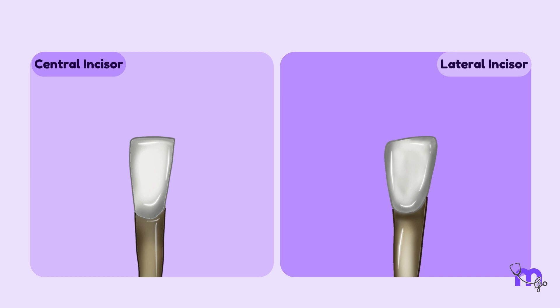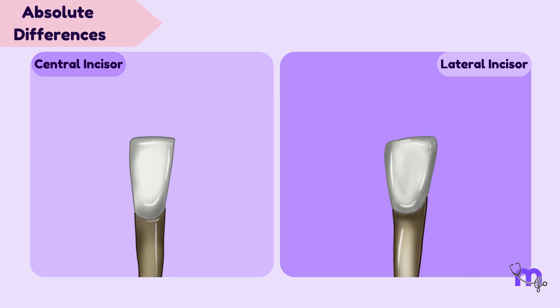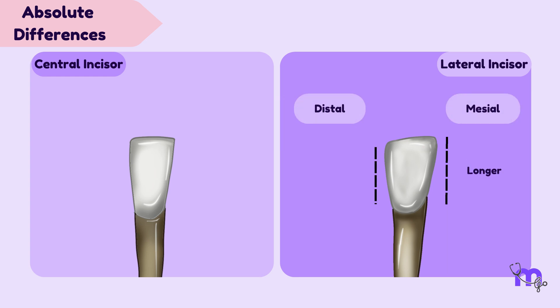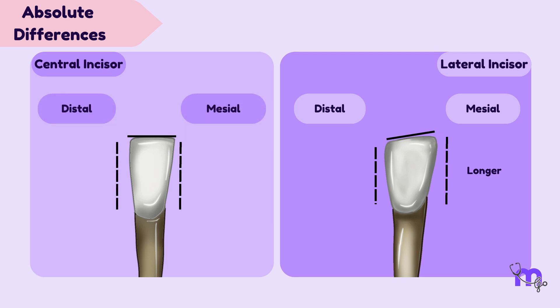One absolute difference is that in the lateral incisor, the mesial side is longer than the distal side, resulting in a distally sloped incisal ridge, which is not seen in the central incisor.